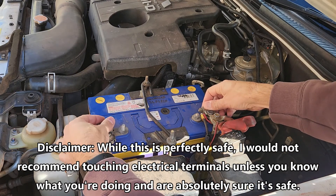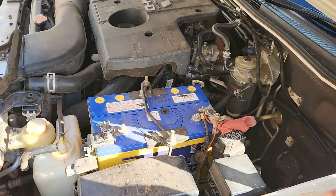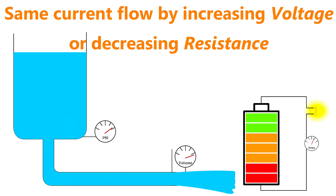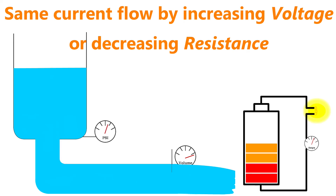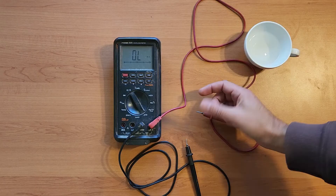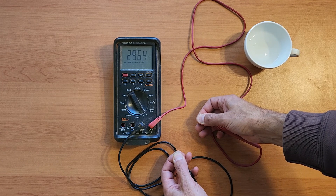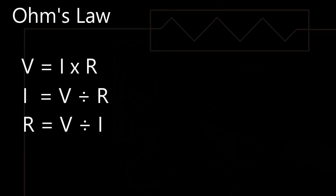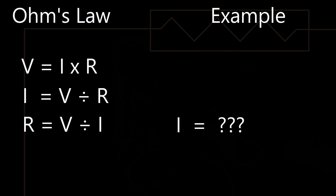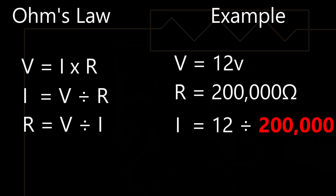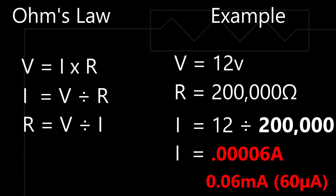So why can you touch the positive and negative terminals on a car battery without getting killed? Remember the water illustration — the two factors which affect current flow are voltage and resistance. In this case, the resistance of the human body is so high that only a tiny amount of current can flow. I used a multimeter to measure the resistance of my body and it was about 200 to 300,000 ohms, which is very high. Using Ohm's Law — I equals V divided by R — with 12 volts and 200,000 ohms of resistance, the current works out at just 0.06 milliamps, or 60 microamps.